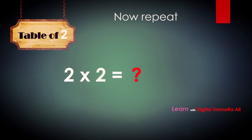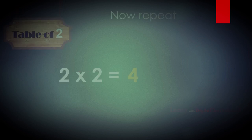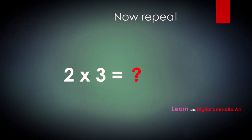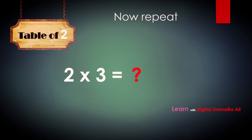Two twos are — yes — two twos are four. Two threes are — yes — two threes are six.